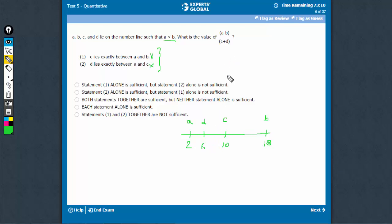Let's find out the value. A minus B is 2 minus 18. C plus D is 6 plus 10. So, this is equal to minus 16 upon plus 16 which is minus 1.